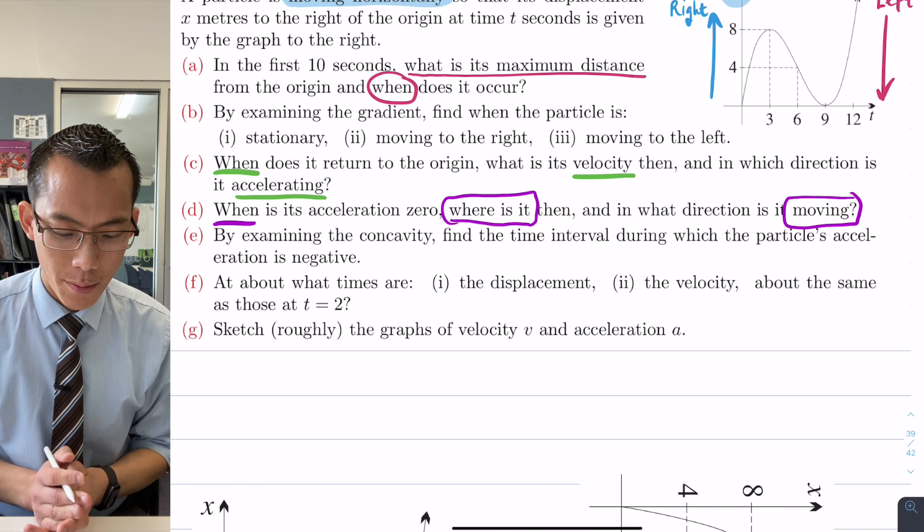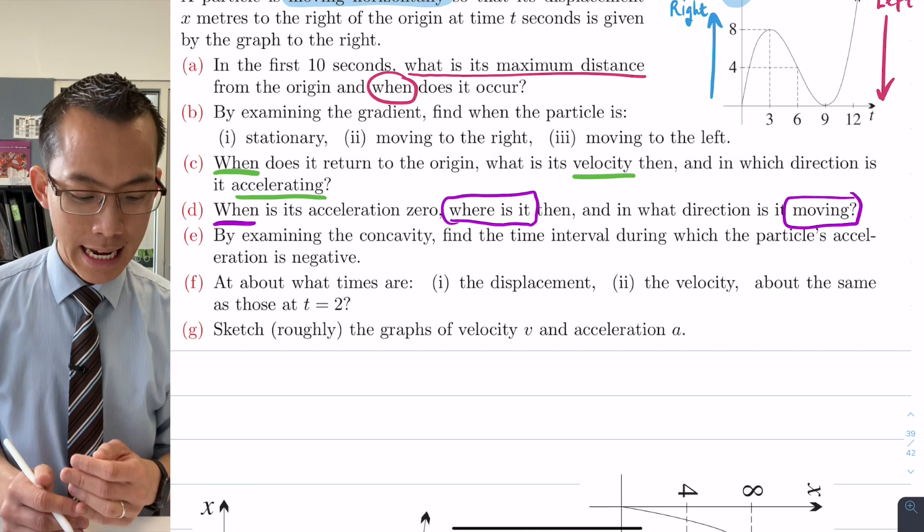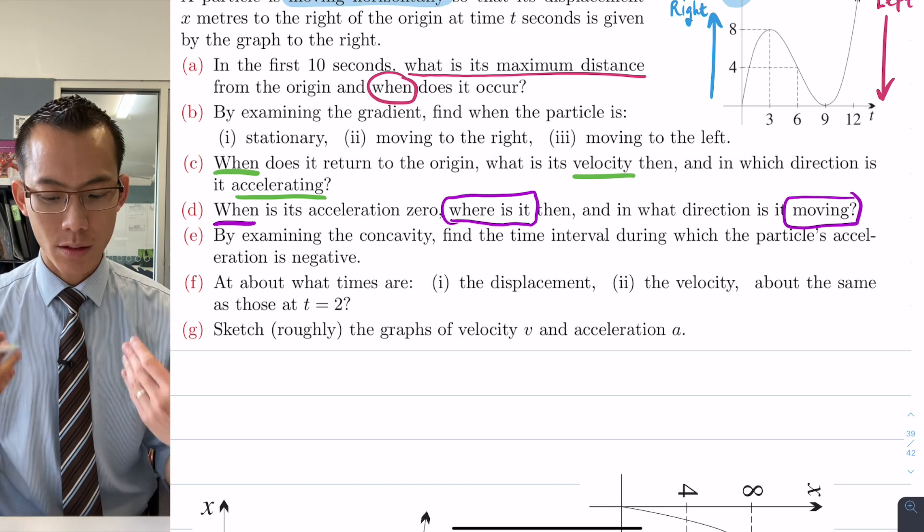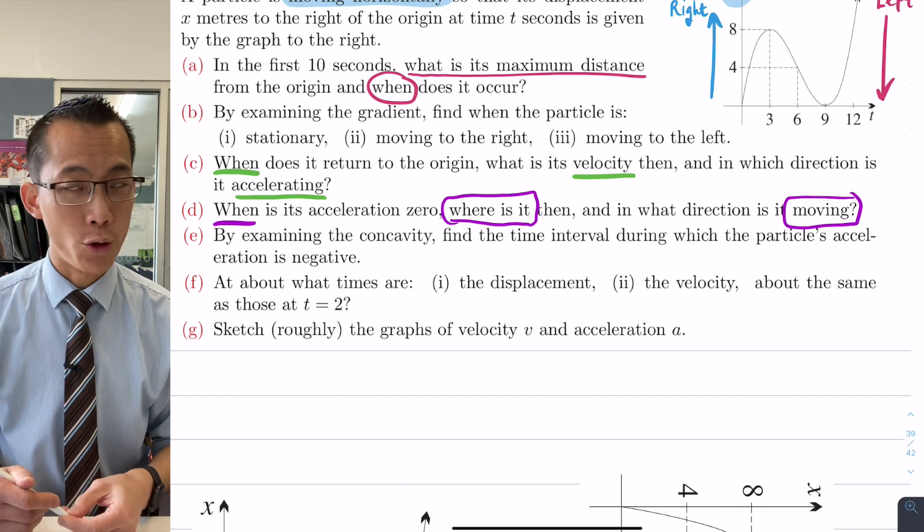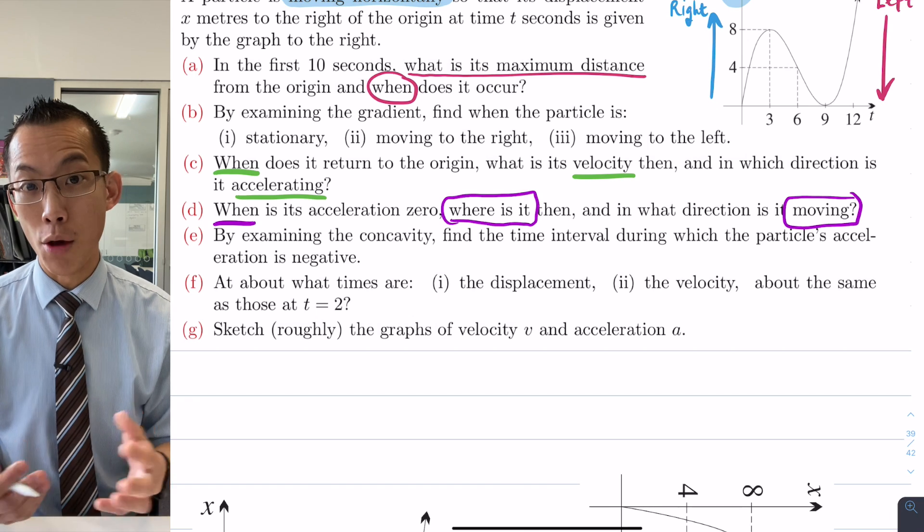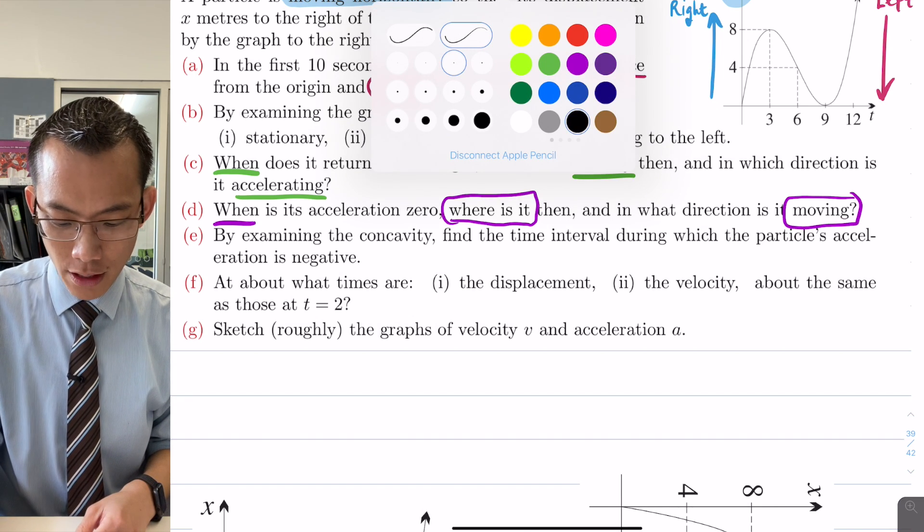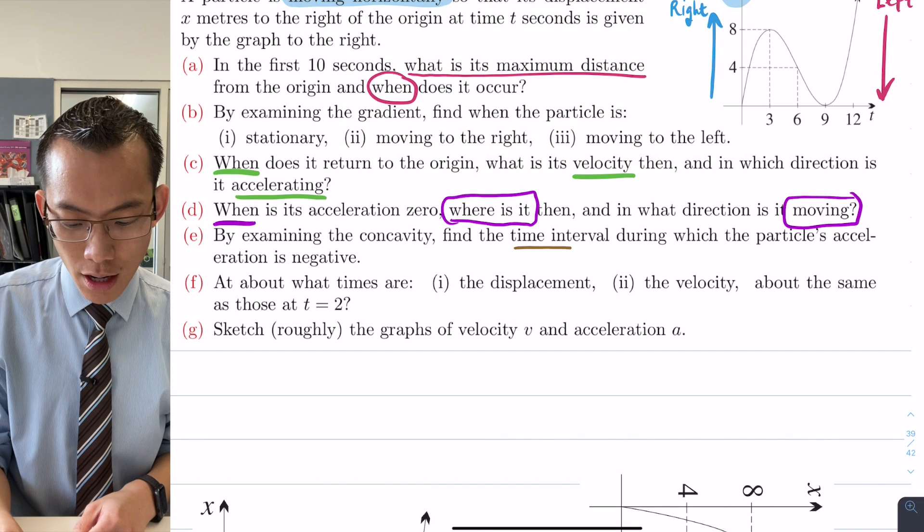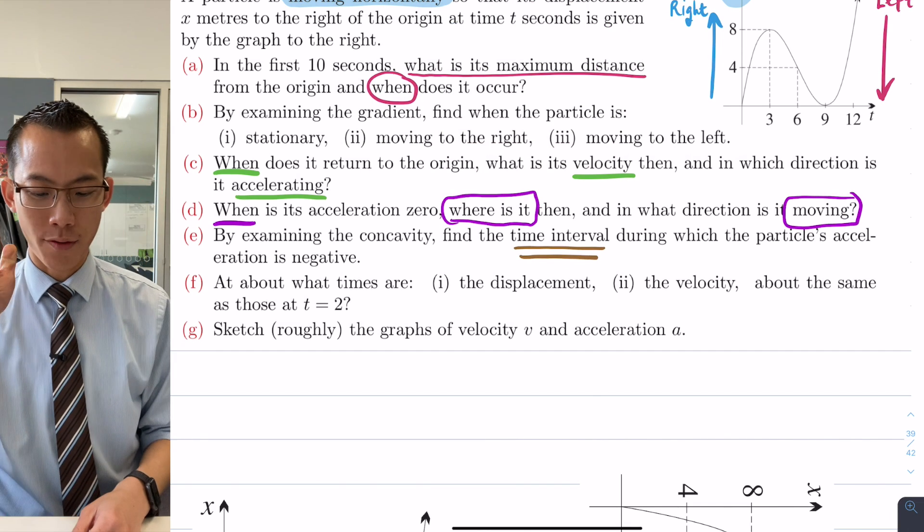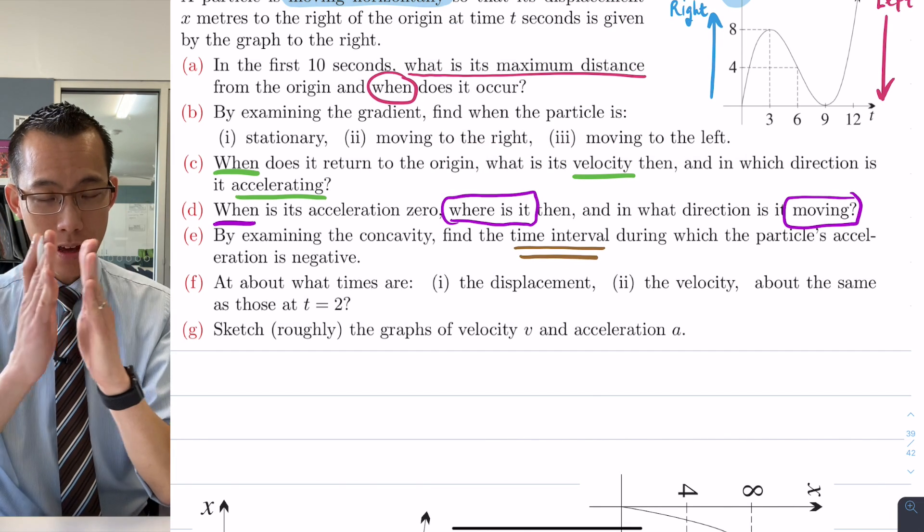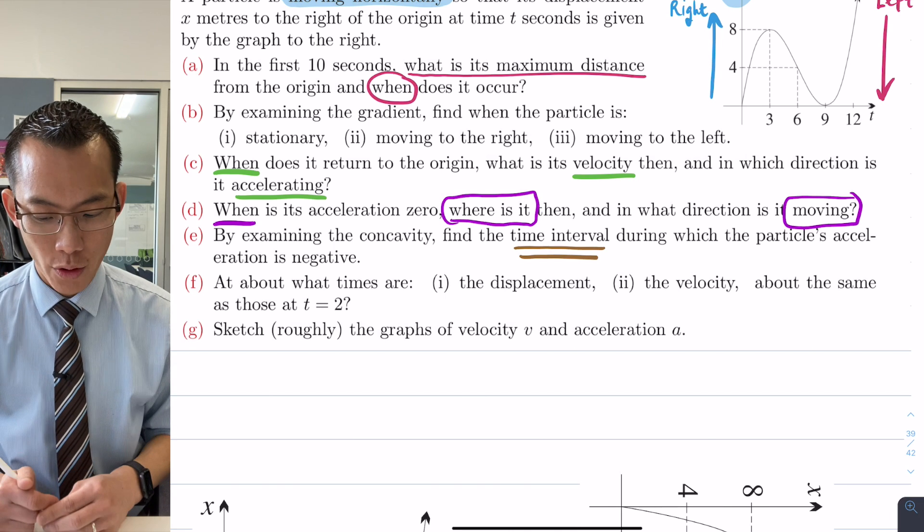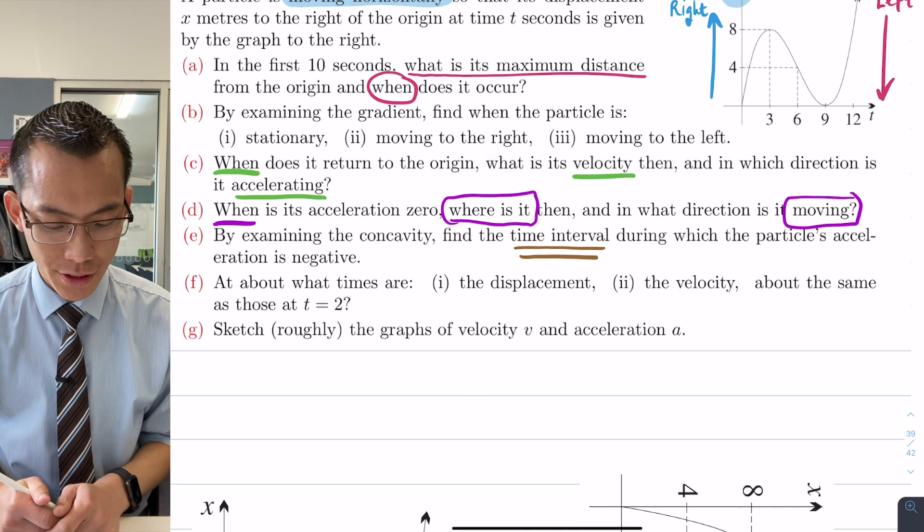Okay this is interesting. So far in the questions A, B, C, D they've been asking us when, so that's usually an instantaneous moment in time. But because they're asking for a time interval, this is from when to when, an interval has to have a start and an end point.